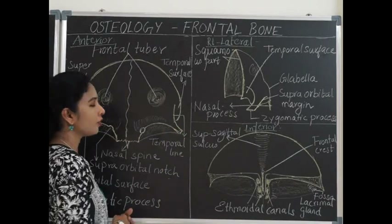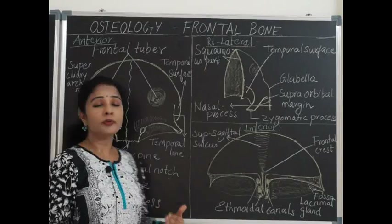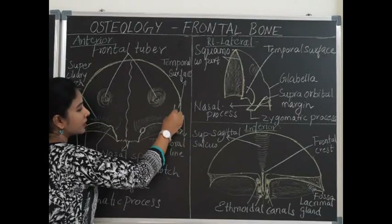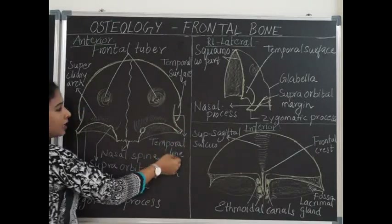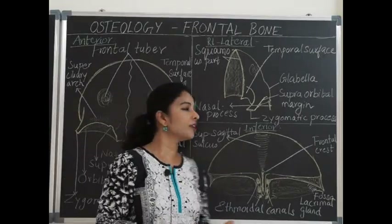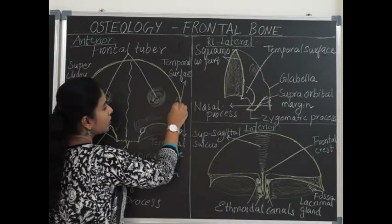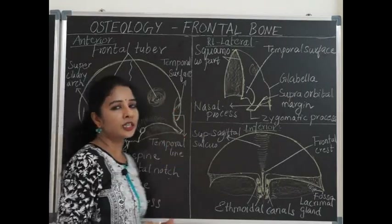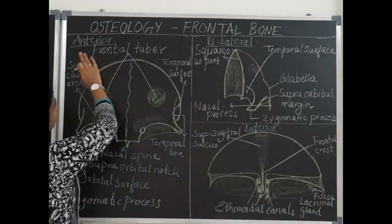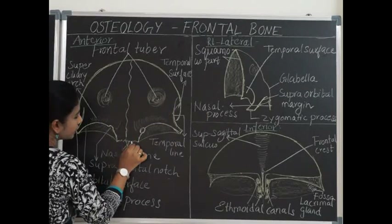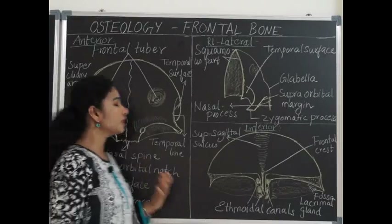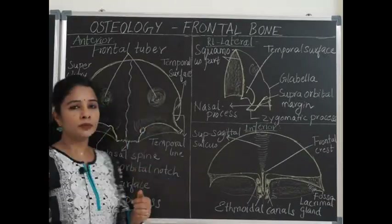On either side, the projections are called the zygomatic process of the frontal bone, which articulates with the frontal process of the zygomatic bone to form the zygomatic arch. Tracing the upper border of the zygomatic process forms a curved line called the temporal line, which divides into the superior and inferior temporal lines. The superior temporal line gives attachment to the temporal fascia, and the inferior temporal line along with the temporal surface gives attachment to the temporalis muscle. Inferiorly, the anterior surface has a serrated margin with a small sharp projection called the nasal spine, which articulates with the nasal bones to form the bridge of the nose.